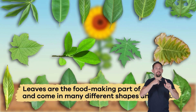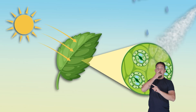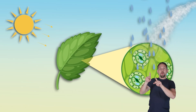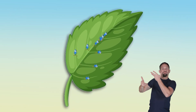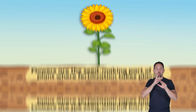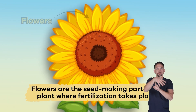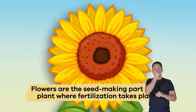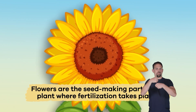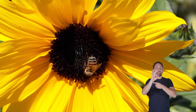Leaves are the food-making part of the plant and come in many different shapes and sizes. They catch light and include openings to allow air and water to come and go. Veins carry water and nutrients throughout the leaf.